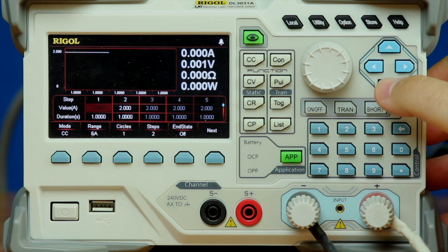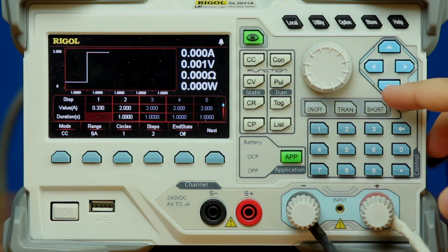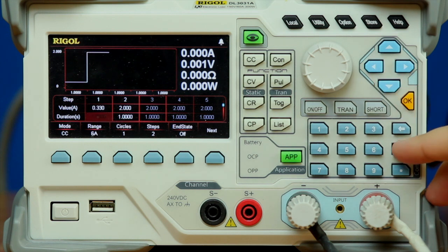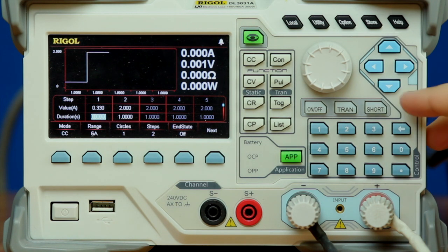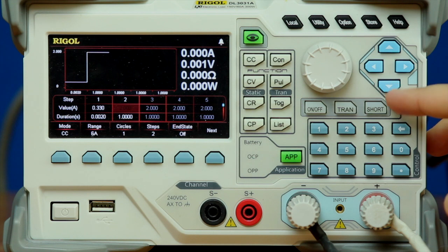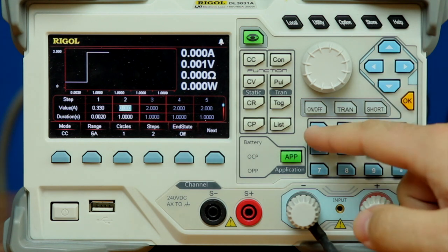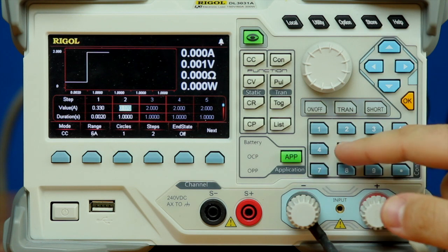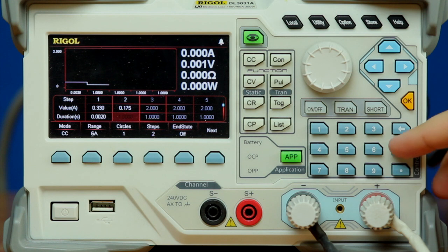And then I'll set the time duration to be at 0.002 seconds. And then the same thing for our low level, which will be 0.175 amps. And our time will be 0.1 second.